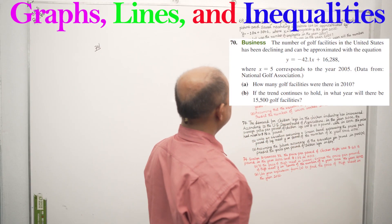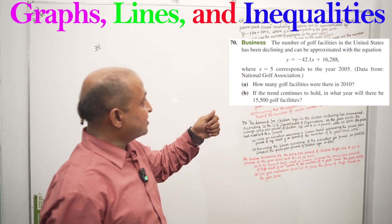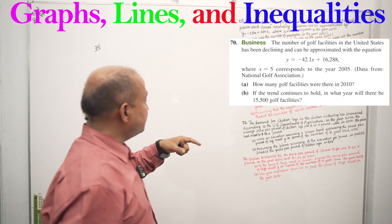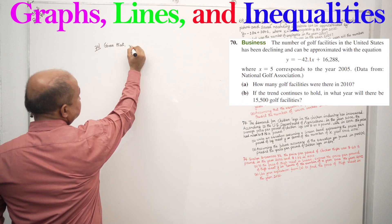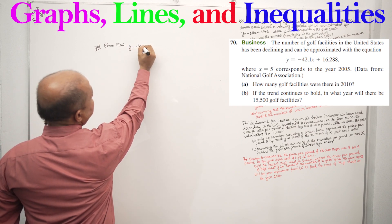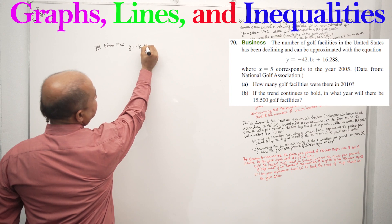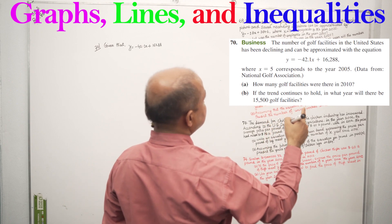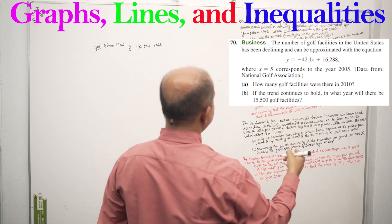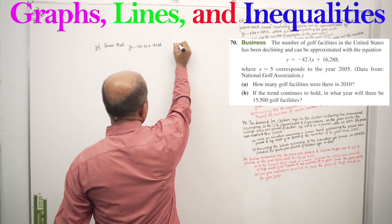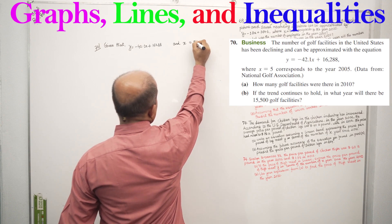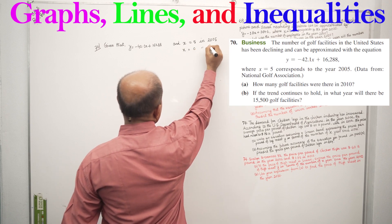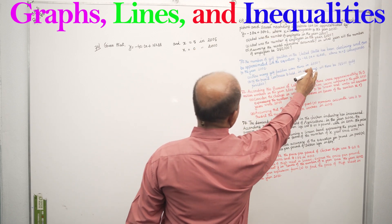The number of golf facilities in the United States has been declining. It can be approximated with the equation Y equals minus 42.18x plus 16288, where X equals 5 corresponding to 2005, and X equals 0 corresponding to 2000. Now we have to think about 2010.